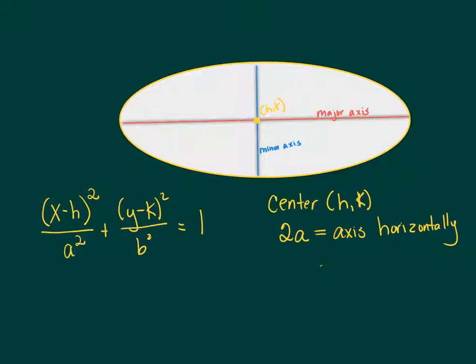Once I know my center, I know to go left a units and right a units. This is a units and this is a units, so the entire length of my major axis is 2a.